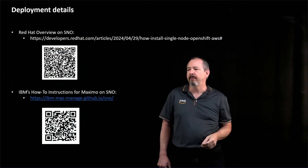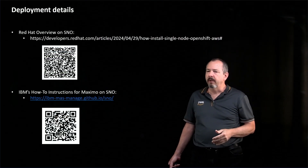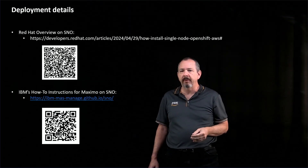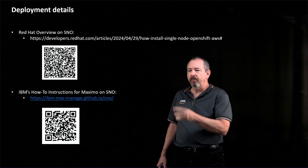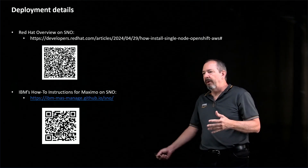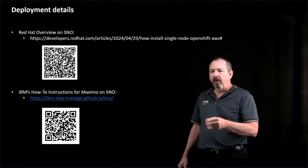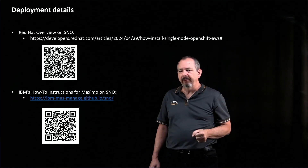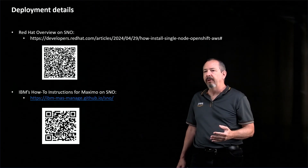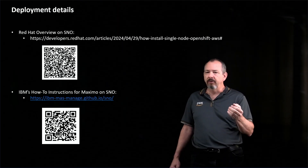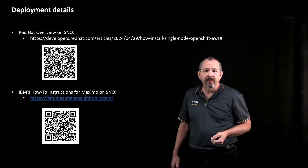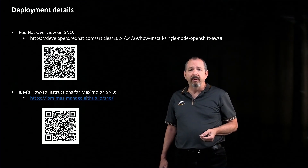If you'd like to know more information about this smaller containerized Red Hat IBM Maximo and Single-Node OpenShift environment, here are two links: one to the Red Hat overview on Single-Node OpenShift — what it is, what it isn't, how to deploy it — and also IBM's instructions on how to do this very same thing, including getting the container, how to use it, how to deploy, and how to dismantle after you're done. I'm Mark Brown, AWS and IBM. We thank you for your time.